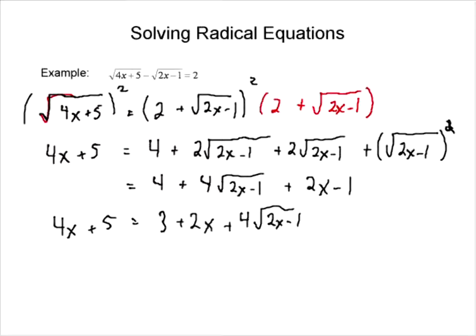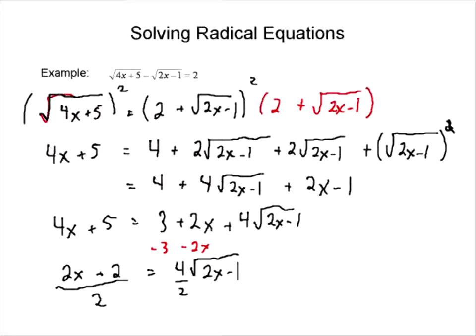To get rid of the second radical, we've got to do the same thing — only this time we now need to isolate for this radical. So if we isolate for this radical, what we're going to do is subtract 3 and subtract 2x from both sides. When we do that, we're going to get 2x plus 2 equals 4 root of 2x minus 1. What I can do to make this a little bit easier is divide both sides by 2, and I'm going to get x plus 1 equals 2 root of 2x minus 1.